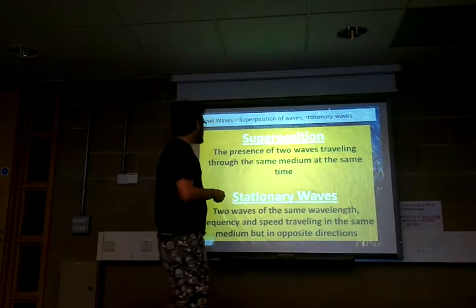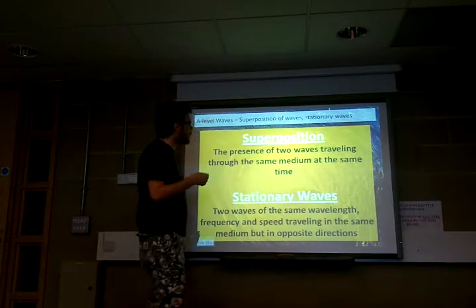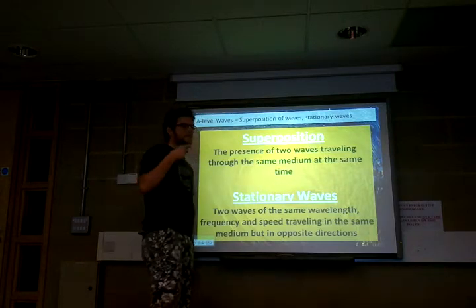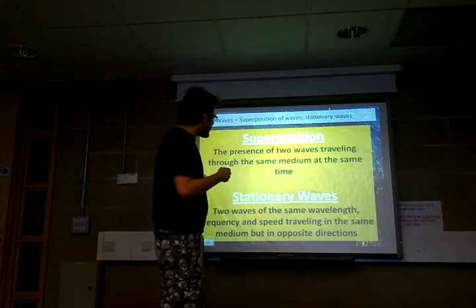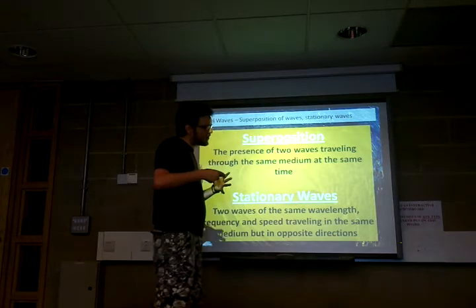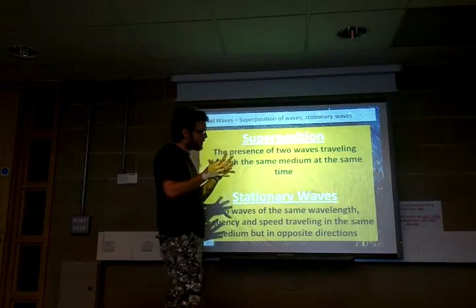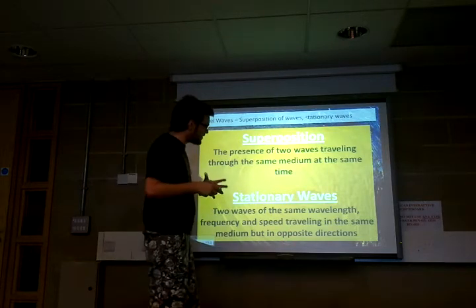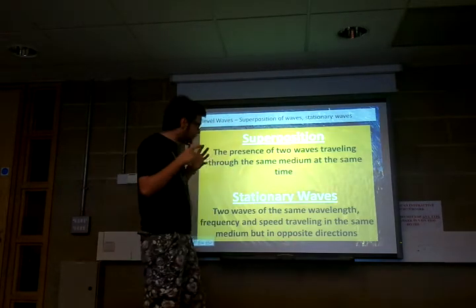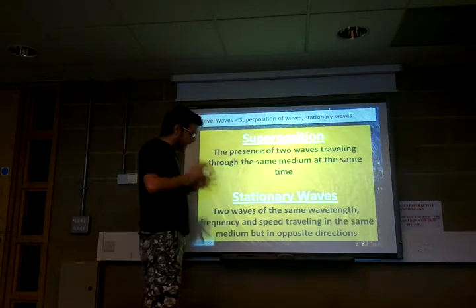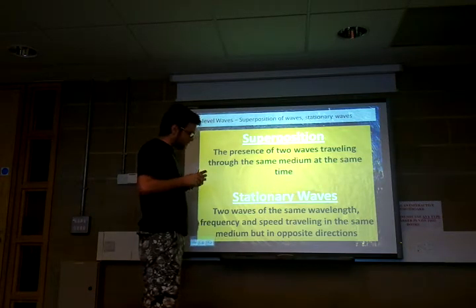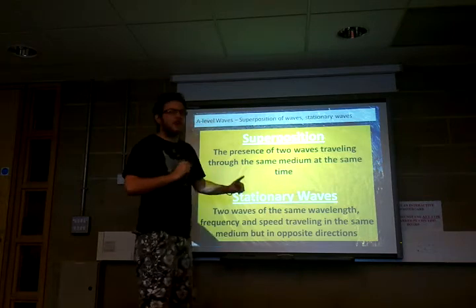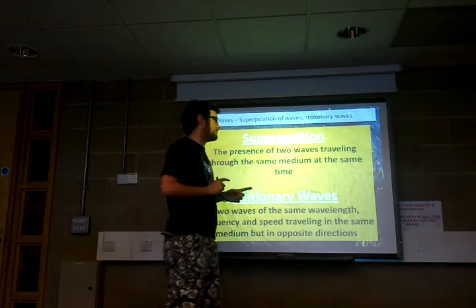Superposition is the presence of two or more waves travelling through the same medium at the same time. Stationary waves is where there are two waves that have exactly the same wavelength, exactly the same frequency, and are travelling at exactly the same speed, but they're travelling in opposite directions.